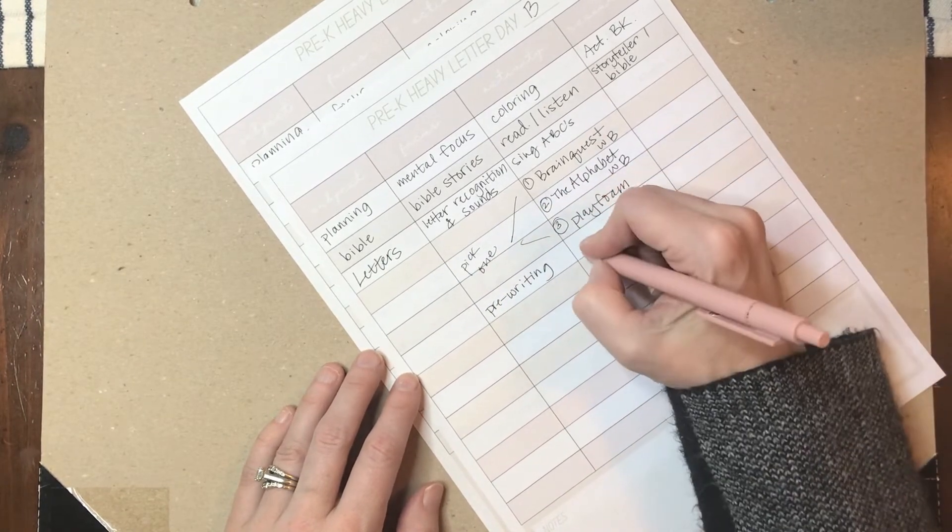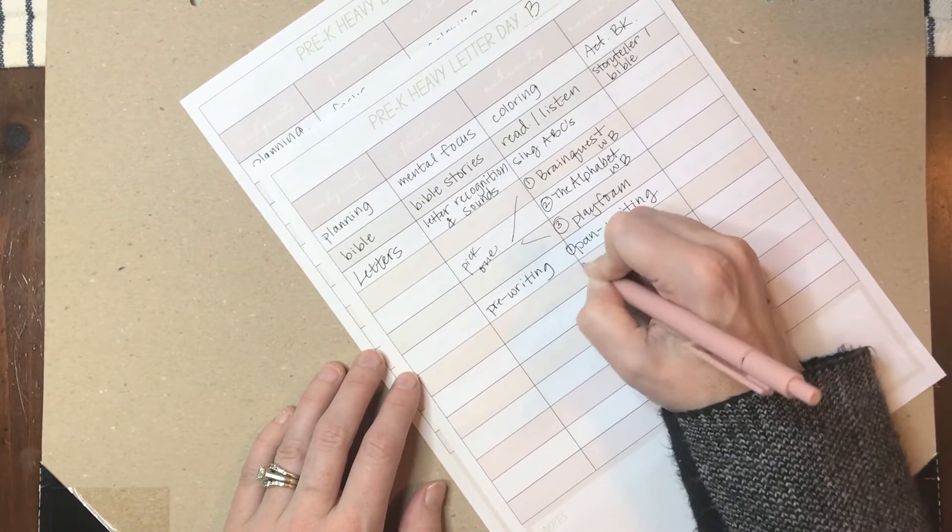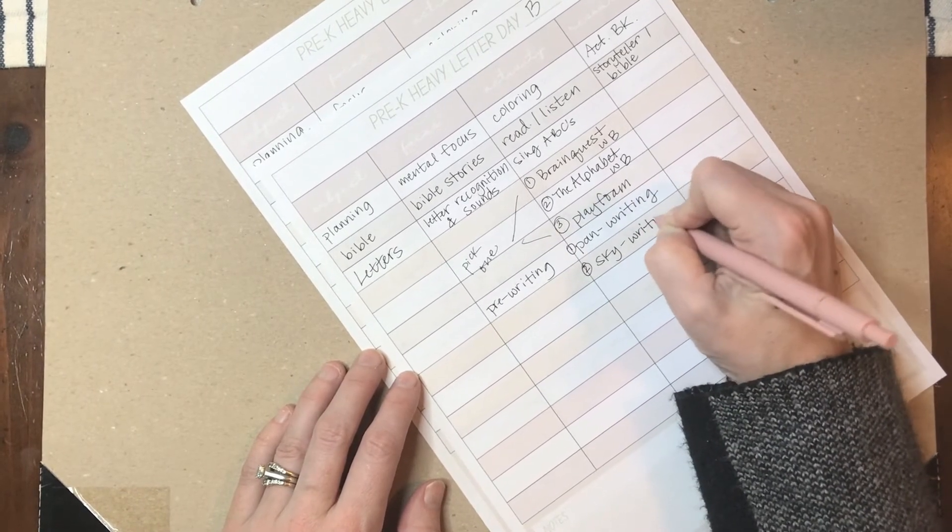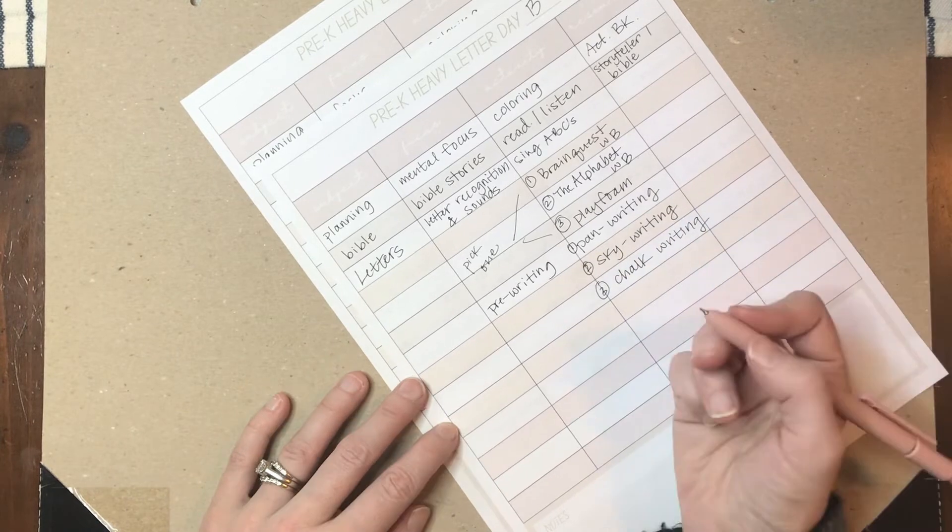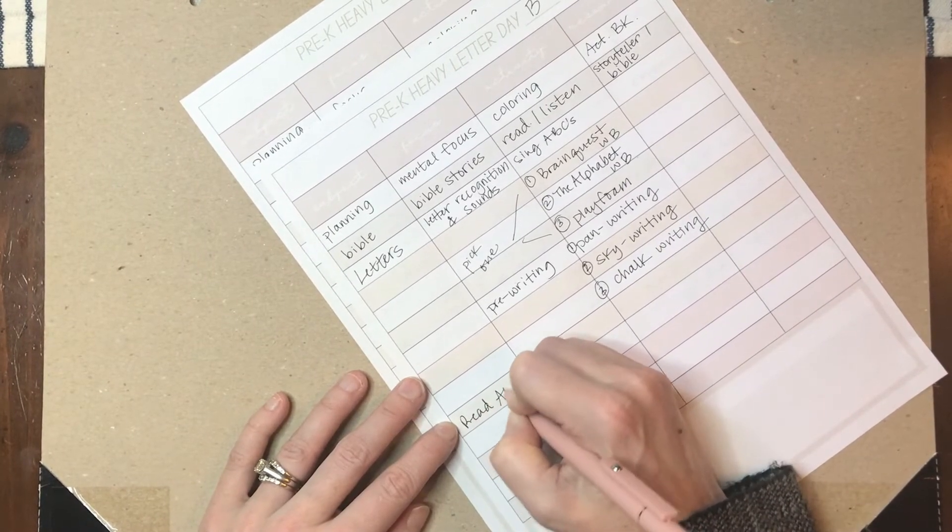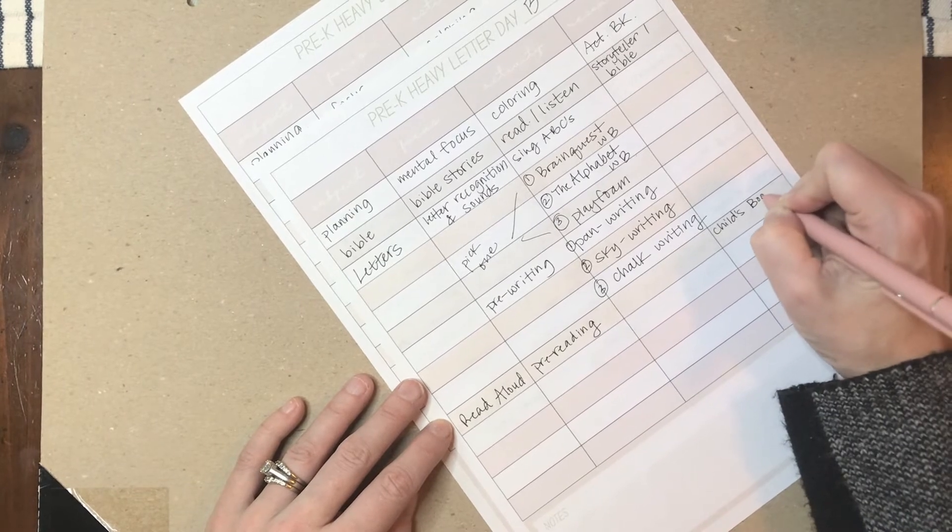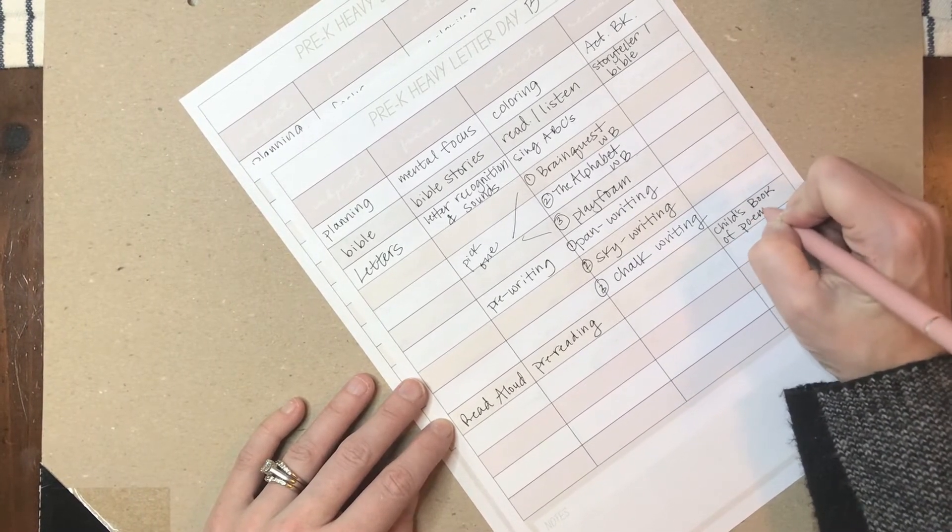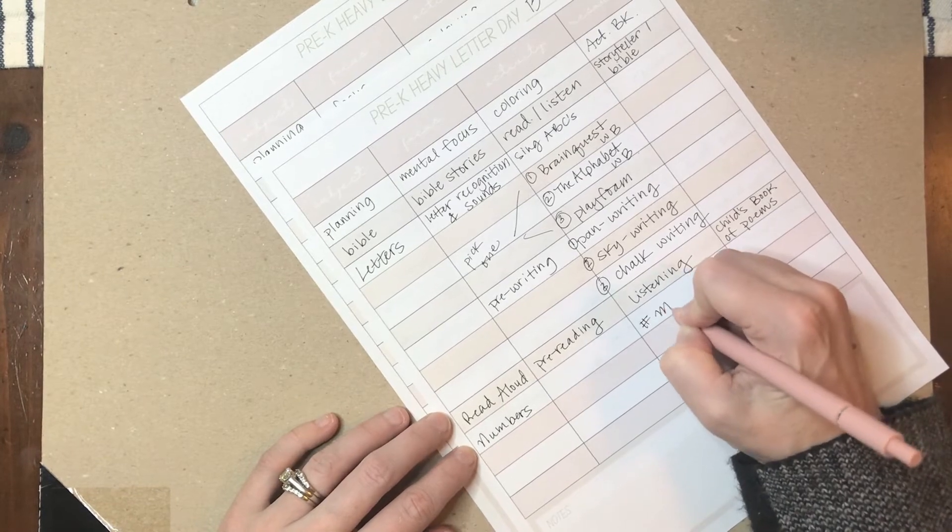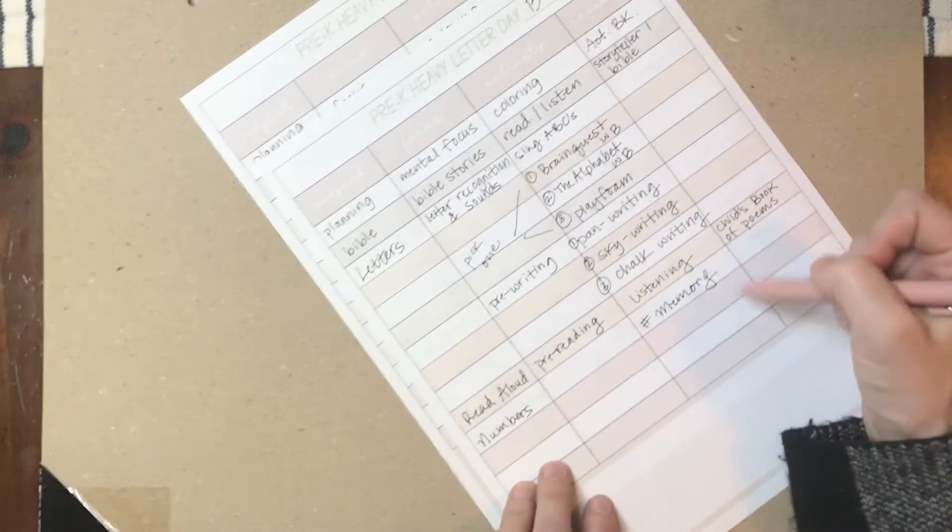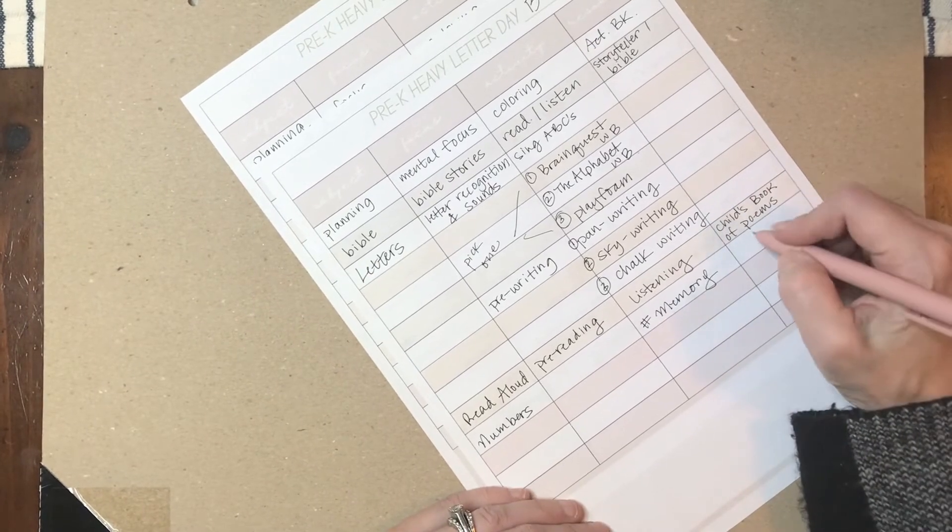So pre-writing, we like to do pan writing like in the flour, or sky writing, or chalk writing. I mean chalk writing outside, like on the ground. Then we'd be down to read aloud. So the other read aloud we are doing is Child's Book of Poems. I gotta be careful, this one will put them right to sleep though. For numbers, number memory. I mean we play this one a lot. It's kind of the core of our curriculum. It's good at diagnosing what they need to work on more, and it also was good practice. So memory. So I just write any of my flashcards.